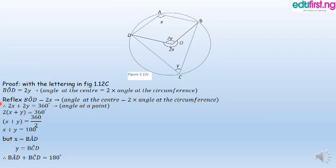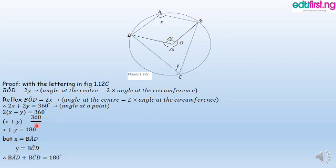Therefore, 2X plus 2Y equals 360 degrees — the total angle at a point is equal to 360. Dividing both sides by 2, we are left with X plus Y equals 180 degrees.